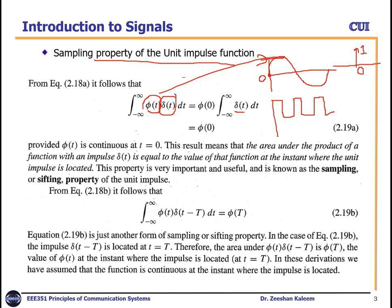If we multiply phi(t) with an impulse that has amplitude one at time zero, what we get is the amplitude of the signal at time zero. That is phi(0) times delta(0), which equals one. So one times phi(0) gives phi(0) — the value of the signal at time instant zero. This result holds provided phi(t) is continuous at time zero. The area under the product of a function with an impulse delta(t) equals the value of that function at the instant where the unit impulse is located.